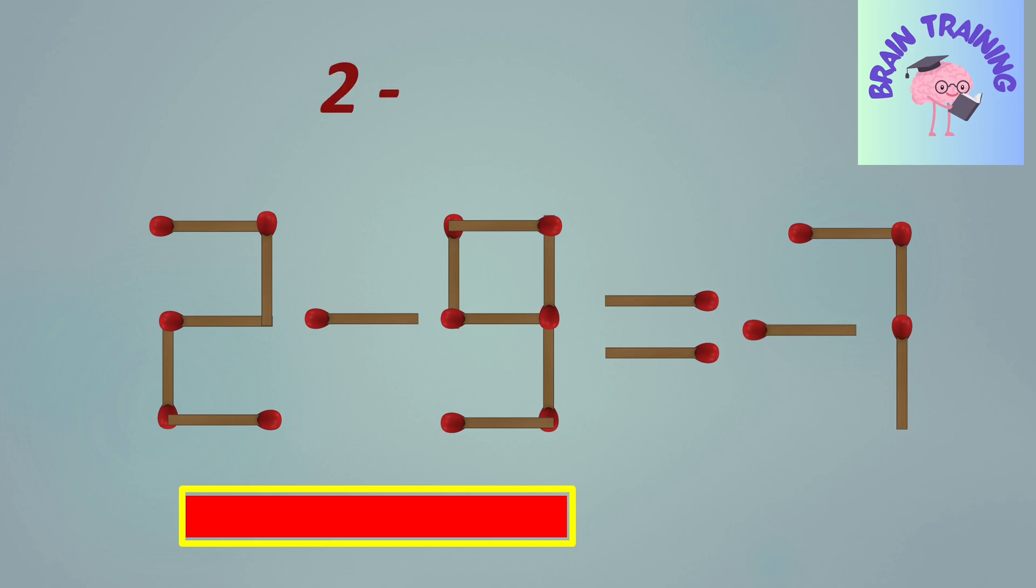This gives you the equation 2 minus 9 is equal to minus 7. Perfect! Congratulations if you found the answer on your own.